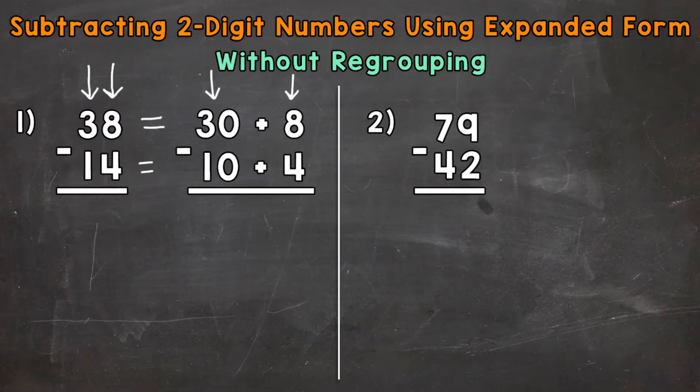Now we can subtract. So when we subtract whole numbers, we start with the ones. So we have 8 ones minus 4 ones. That's going to give us an answer of 4. So we have a 4 in the ones place in our answer. Now we bring the Addition Sign straight down. I know this is a subtraction problem. But we want that Addition Sign brought straight down because it's part of our Expanded Form. So our answer here is going to be an Expanded Form at first. And then we'll put it into Standard Form.